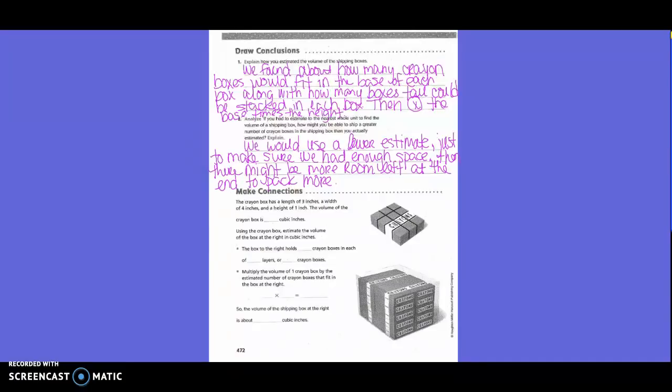Make connections. The crayon box has a length of 3 inches, a width of 4 inches, and a height of 1 inch. The volume of the crayon box is what? 12 cubic inches.